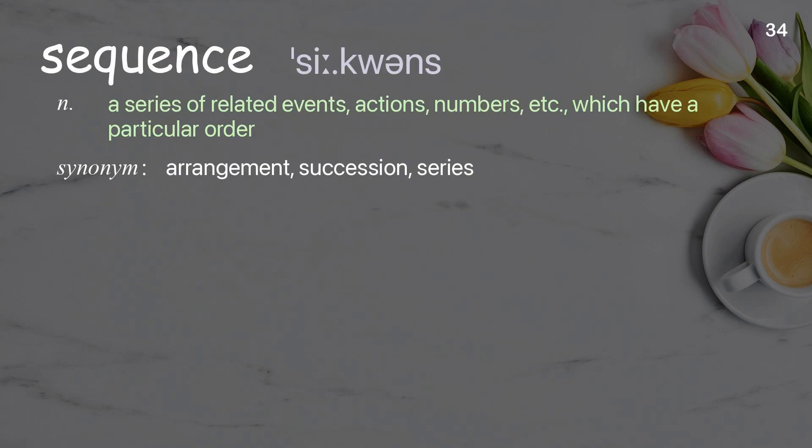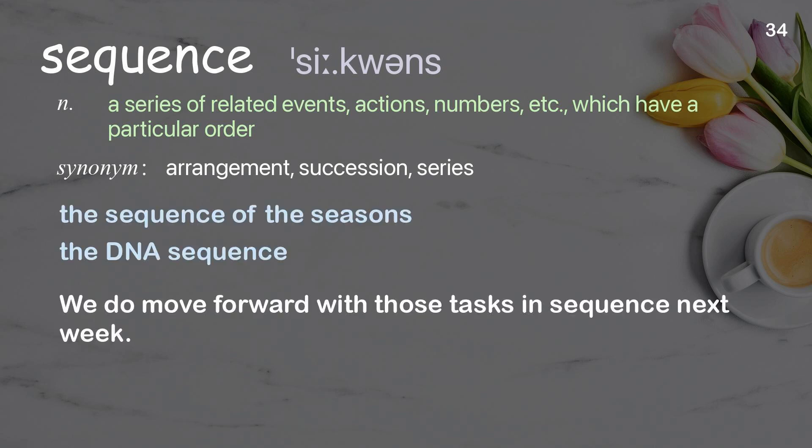Sequence: A series of related events, actions, numbers, etc., which have a particular order. Examples: The sequence of the seasons. The DNA sequence. We do move forward with those tasks in sequence next week.